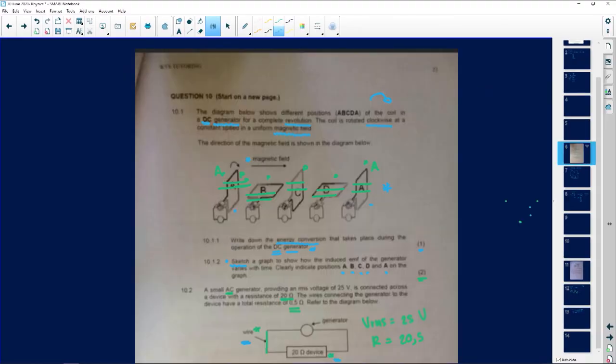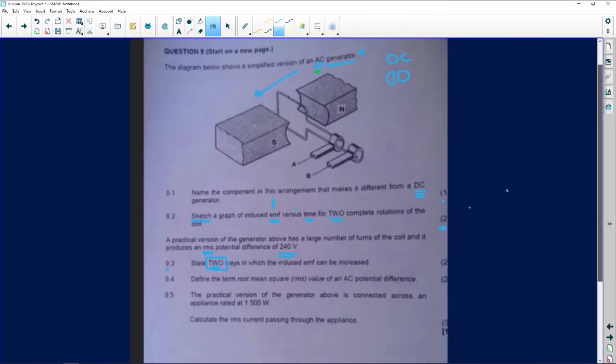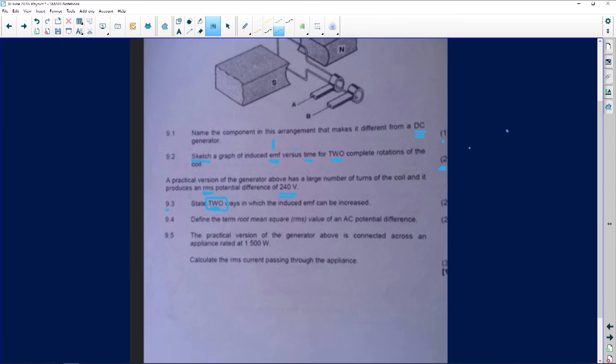The next one, let's look at this question. It says we need to define the term root mean square, which is RMS value of an AC potential difference. Now the word define is very important. When you are defining something, for example, if I say define the weather outside, you're going to tell me it's hot, it's cold. I can't say define the weather and you say the weather is what, what, or somewhat. That's not really defining. When you are defining something, you need to use the correct terminologies. Like the weather is hot, it's cold, it's windy, there's a breeze. You talk weather language. So the same thing.